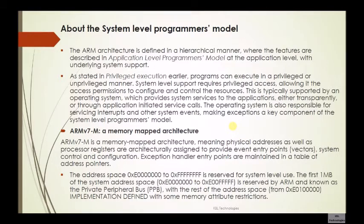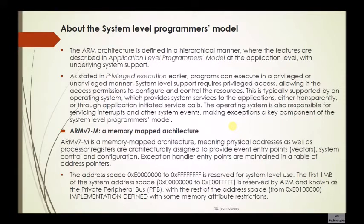In ARMv7M there is a memory mapped architecture, meaning there are only physical addresses and dereferencing a physical address can change its value. The address space from 0xE0000000 to 0xFFFFFFFF is reserved for system level use. The first 1MB of this space, from 0xE0000000 to 0xE00FFFFF, is reserved by ARMv7M and known as the Private Peripheral Bus (PPB). Within this address space there are peripherals used by ARMv7M, which we will see.